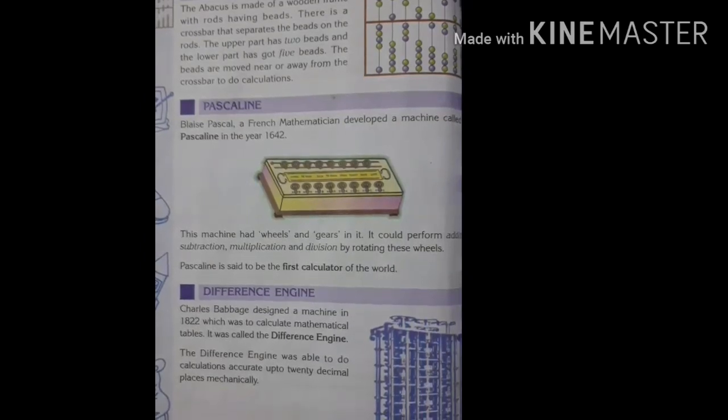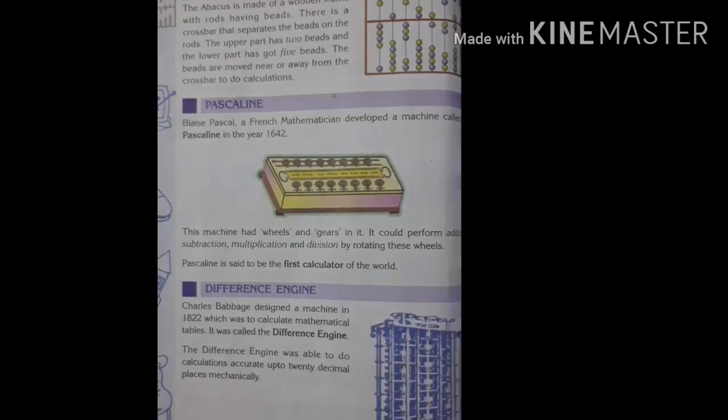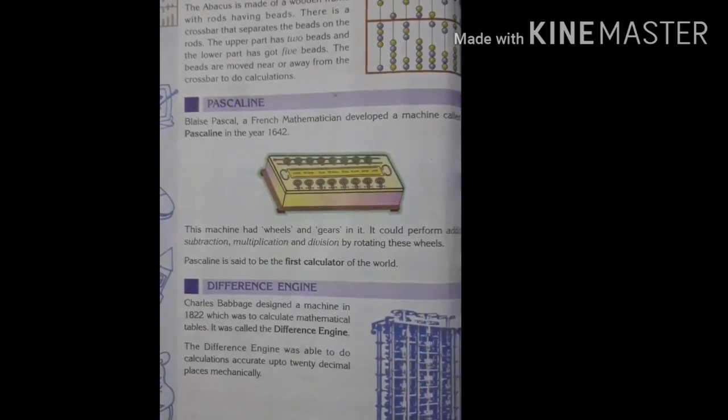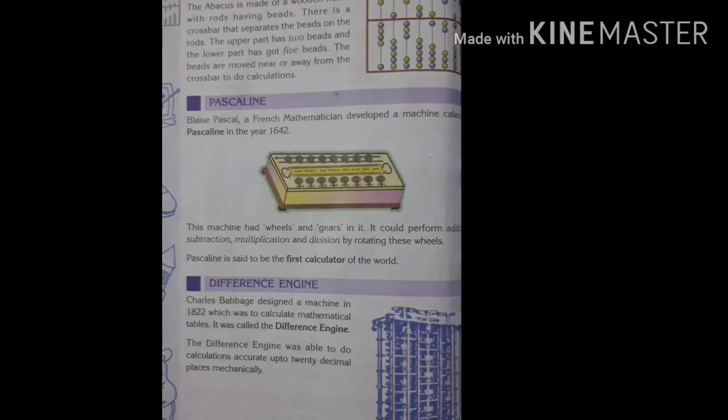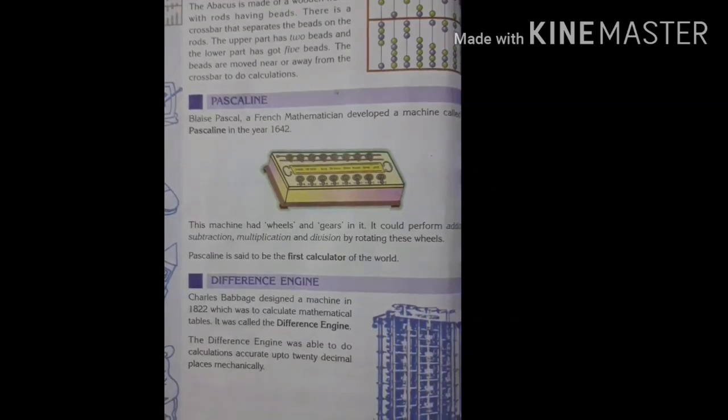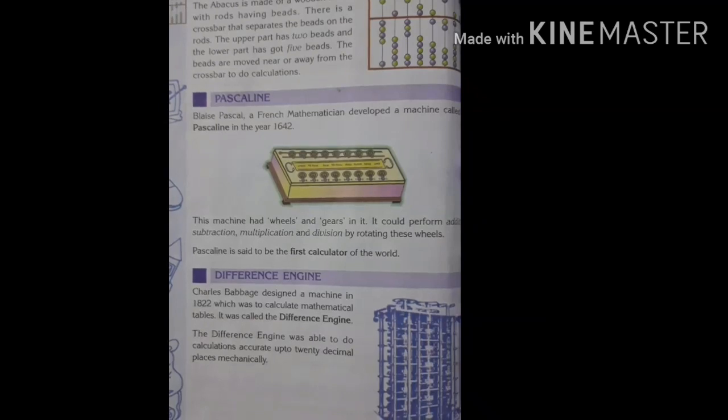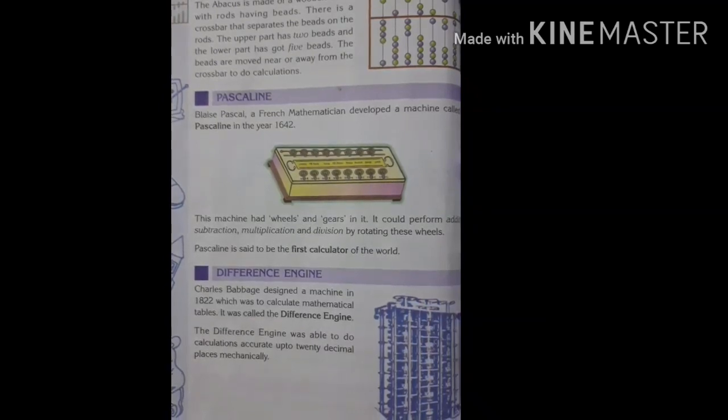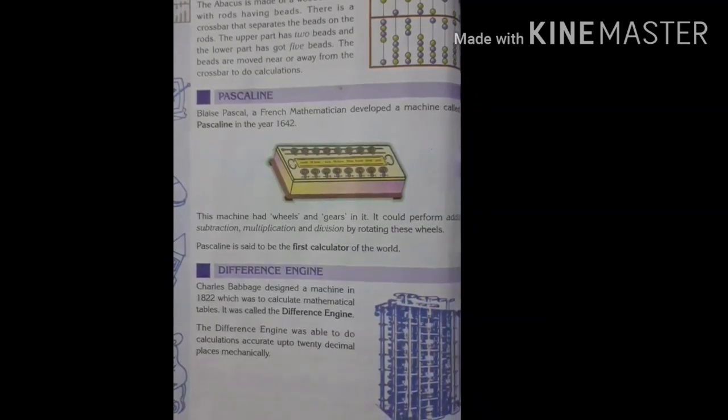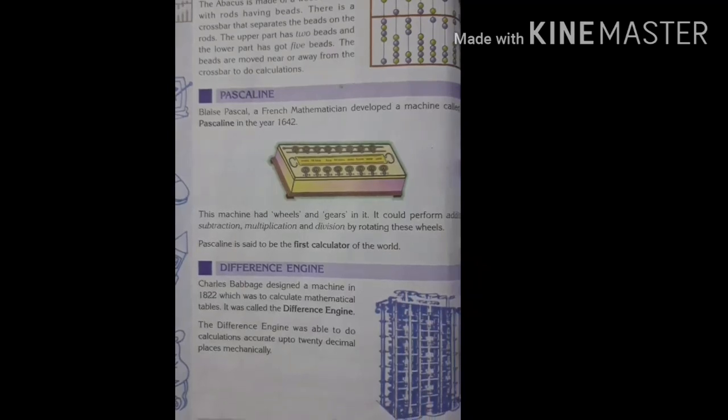Difference Engine: Charles Babbage designed a machine in 1822 which was to calculate mathematical tables. It was called the Difference Engine. The Difference Engine was able to do calculations accurate up to 20 decimal places mechanically.